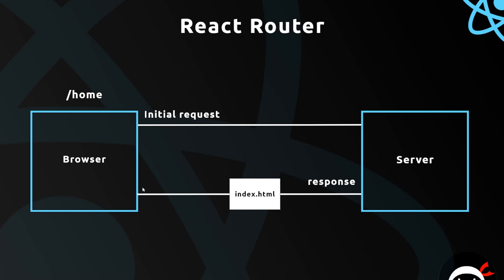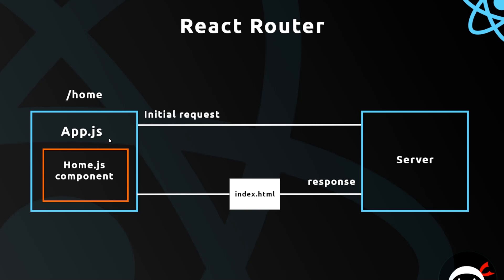We get a response which is the index.html page, and that goes to the browser. React is going to look at this and say, okay, you want the home page, so I'm going to load up a home component. App.js sits at the top as the root component and will always be showing, but React is going to inject the home component inside App.js so we see it when we go to forward slash home — this is the React Router's doing.